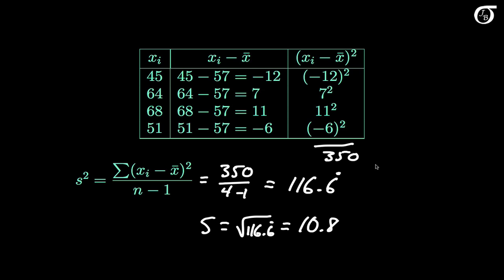Recall that we calculated a mean absolute deviation of 9. The standard deviation is always a little bigger than the mean absolute deviation. How much bigger depends on the shape of the distribution, so there's no simple rule, but the standard deviation will always be bigger than the mean absolute deviation.